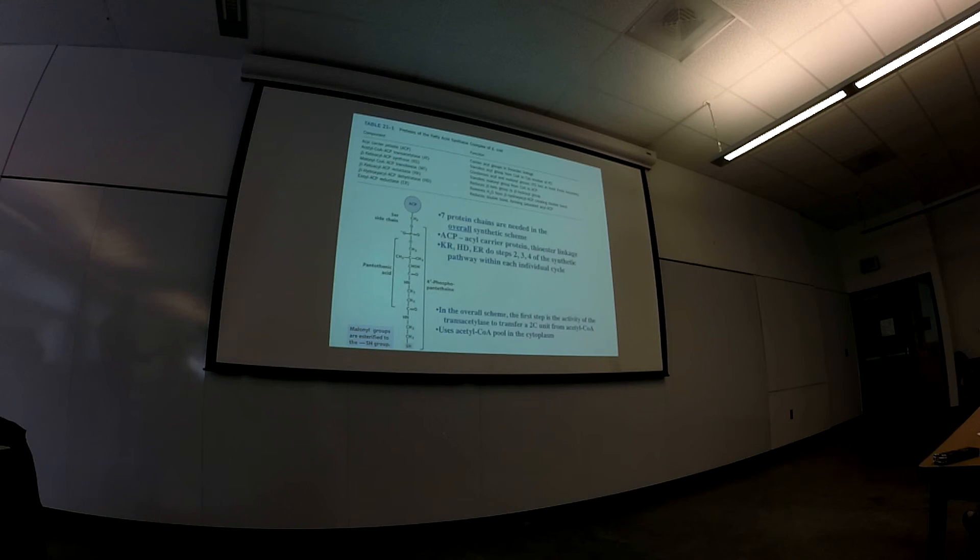and it's got this long group on it, right. This is pantothenic acid, this bigger structure is called 4-phosphopantetheine. But at the end of it, the business end has a sulfhydryl, and this is where the malonate is esterified.